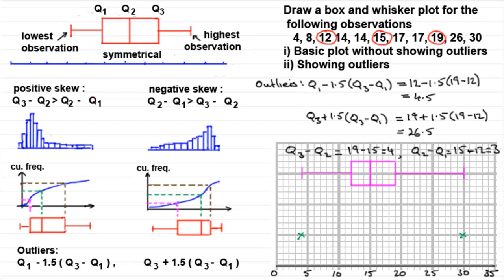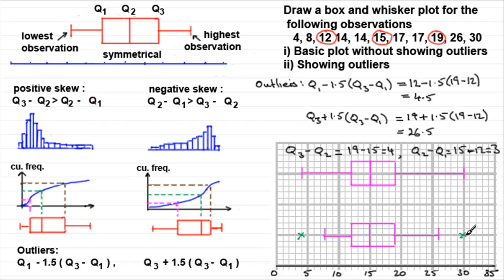To finish off the box plot, we find our smallest value excluding the outlier. We don't take the extreme value 4 — we take the next one up, which is 8. So 8 becomes our smallest value within the non-outlier range. Similarly, the highest value excluding outliers is 26, so we mark in 26. The median at 15, lower quartile at 12, and upper quartile at 19 all remain the same. We join it up to complete the box plot — the whiskers are a little smaller than before, but we have our extreme outlier values marked in.